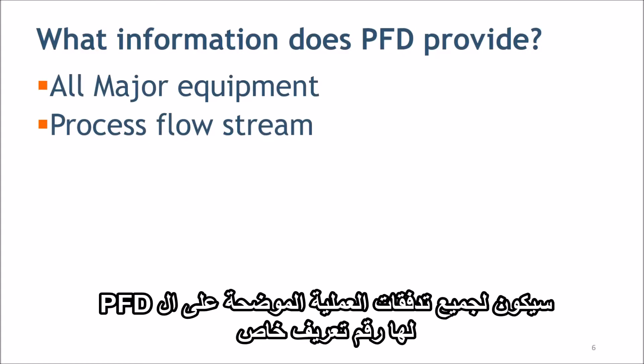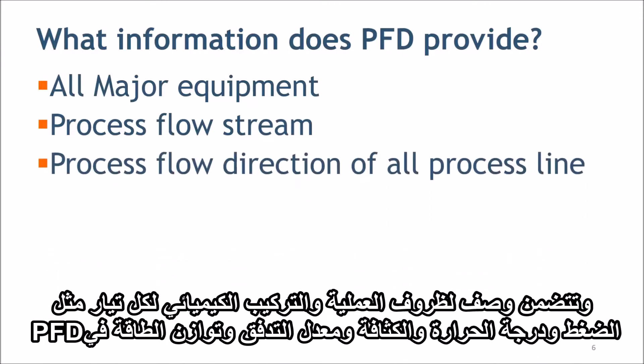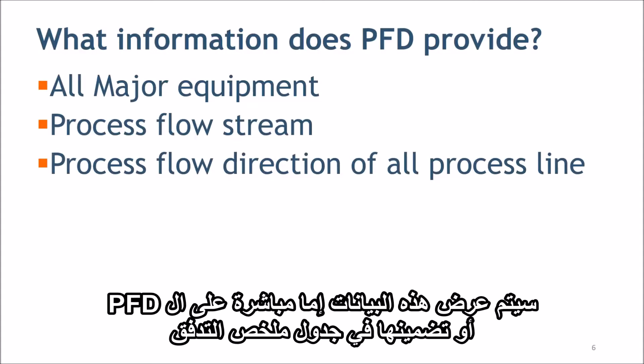All process flow streams shown on PFD will have an identification number. A description of the process condition and chemical composition of each stream — such as pressure, temperature, density, mass flow rate, and mass energy balance — will be included in the PFD. This data will be either displayed directly on the PFD or included in the flow summary table.